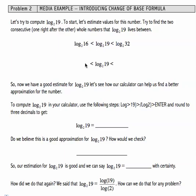Log base 2 of 16, 2 to the 4th power is 16, so that's 4. Log base 2 of 32, 2 to the 5th is 32, so that's 5. So log base 2 of 19 is somewhere between 4 and 5, and I would estimate it's a little bit closer to 4, since 19 is closer to 16.